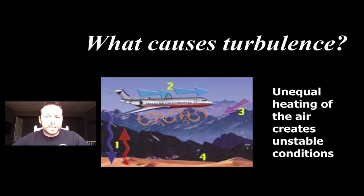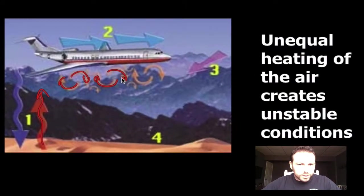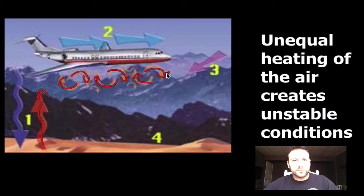Turbulence is caused by the unequal heating of Earth's atmosphere. You can see here that heating of the atmosphere creates this turbulent air. You would expect there to be more turbulent air as the day goes on. So in the morning, it should be relatively calm. As the sun comes out and that energy gets transferred to the ground and to the air, we're going to see more turbulent conditions.